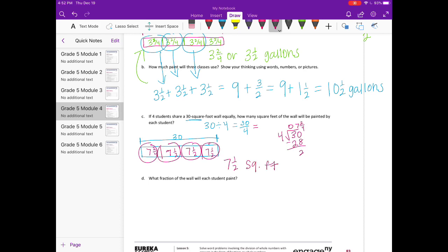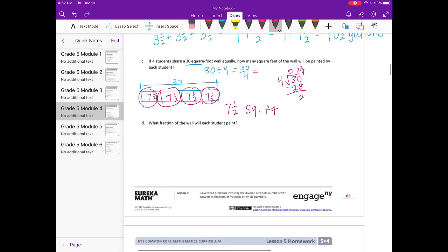Part D: What fraction of the wall will each student paint? So now we're looking at our tape diagram. Each student—student one is painting this part, two is painting this part, three and four. So each student is painting one fourth of the whole wall.